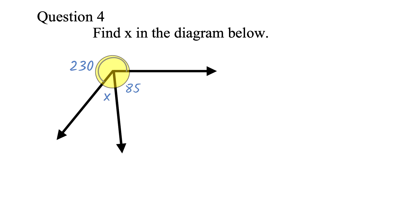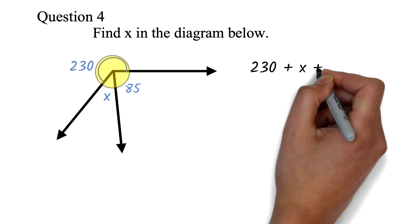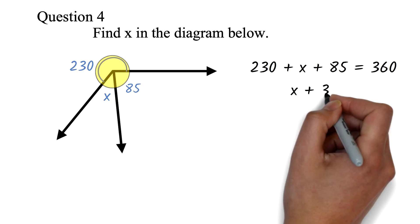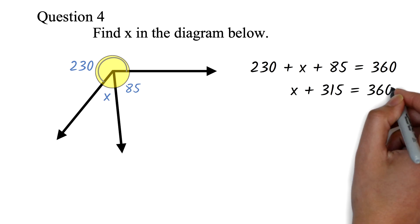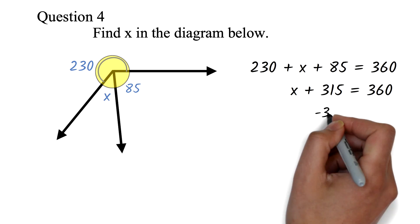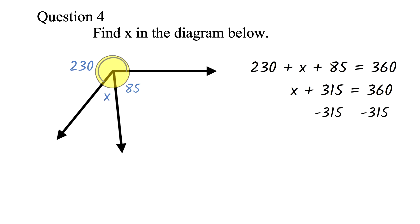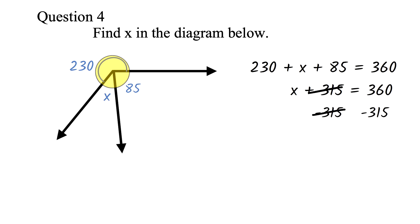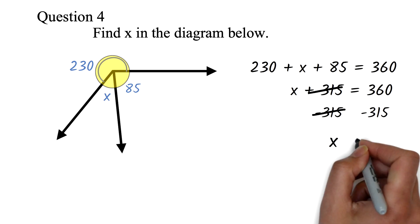So here, we will add 230 plus x plus 85 equals 360. We can add 230 plus 85 to get 315. So we have x plus 315 equals 360. We can subtract 315 from both sides. The 315 will cancel out. 360 minus 315 is 45. So x is 45.